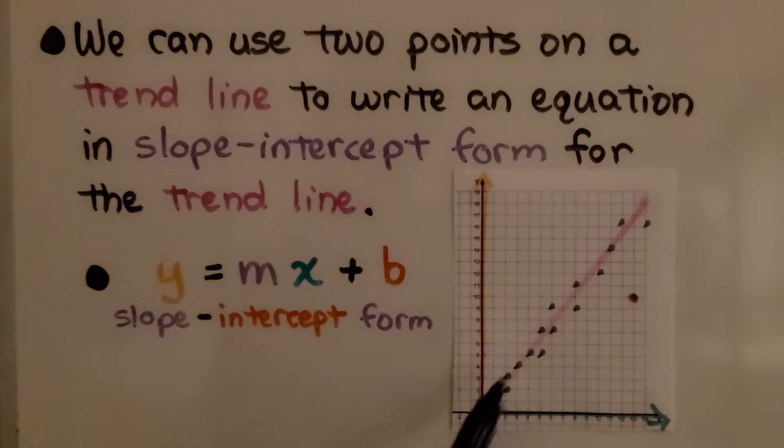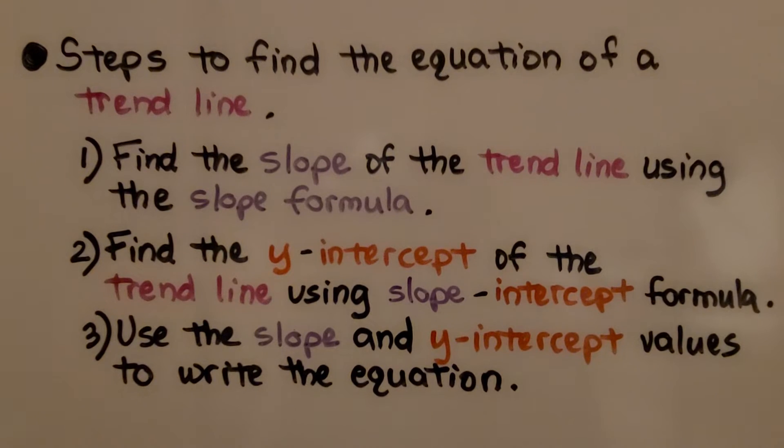Here we have our trendline and we have our data points. So here are the steps to find the equation of a trendline. The first thing we do is find the slope of the trendline using the slope formula. Second, we find the y-intercept of the trendline using the slope-intercept formula. And last, we use the slope and y-intercept values to write the equation.